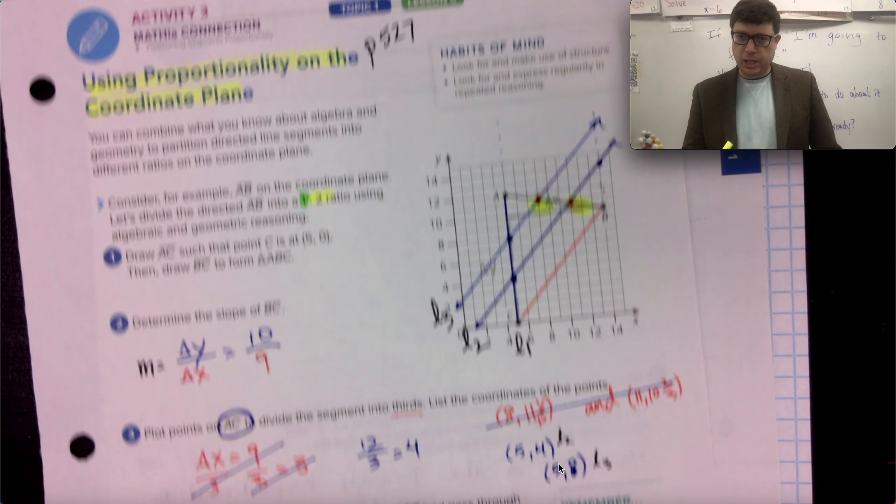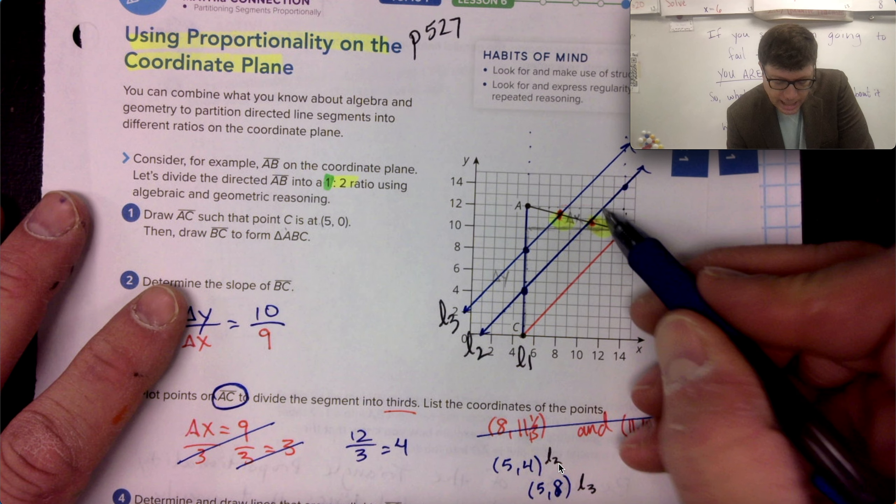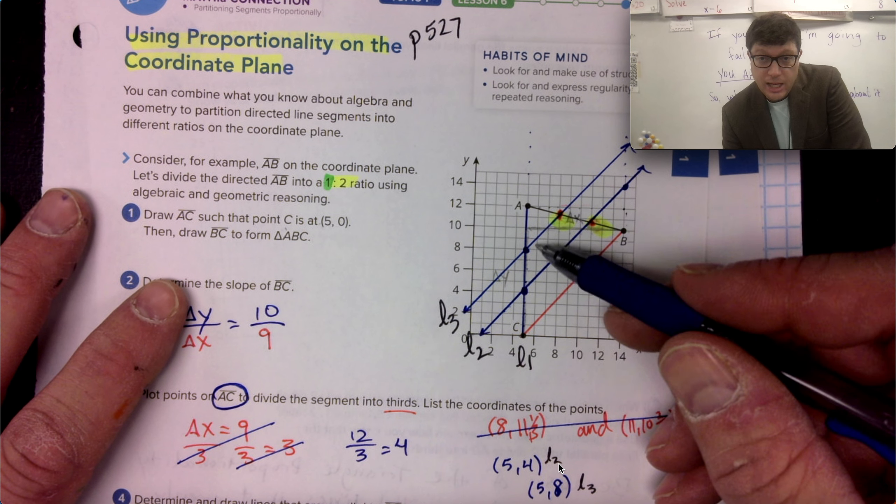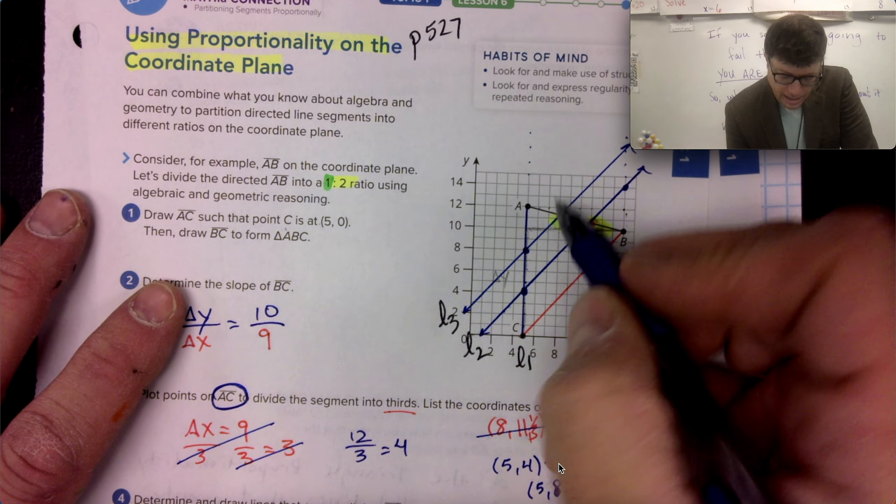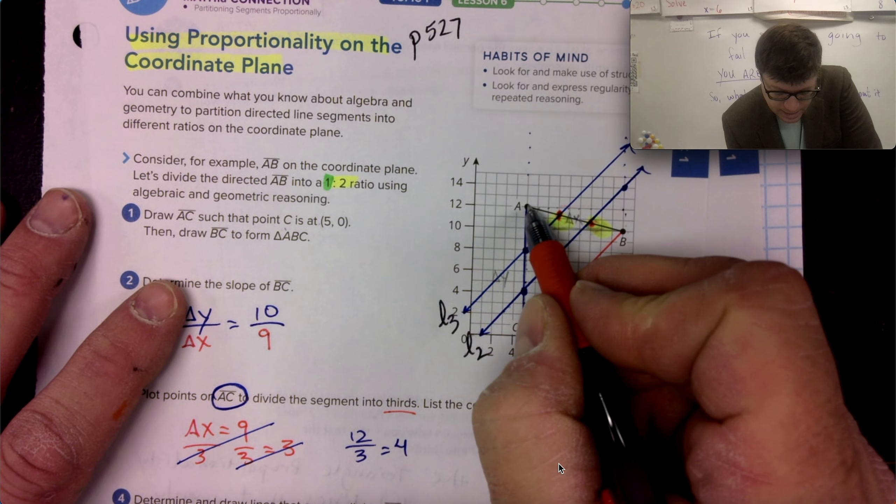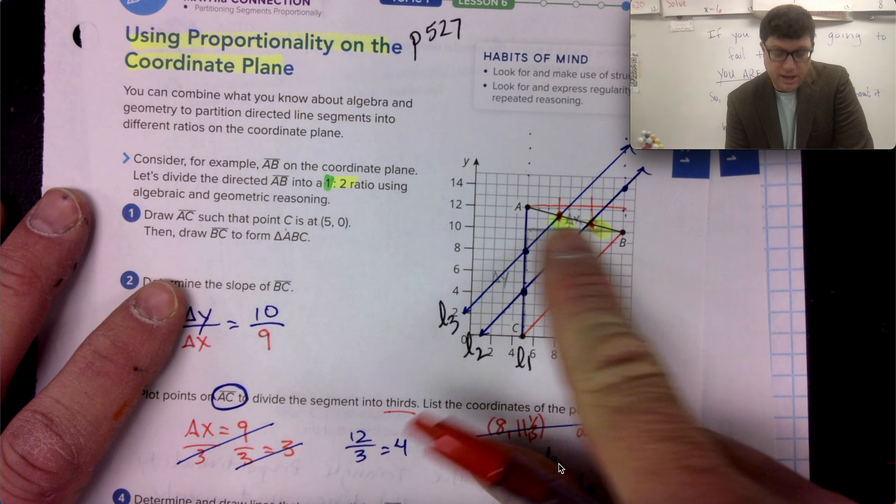Now I did it visually by saying if I know that I plotted this accurately and I know I divided the AB segment into thirds, then that meant that I took the X change and I divided it into three sections and I found where it crossed.